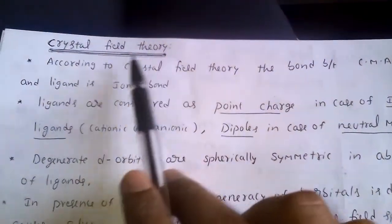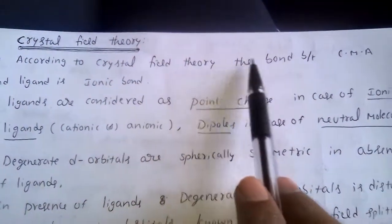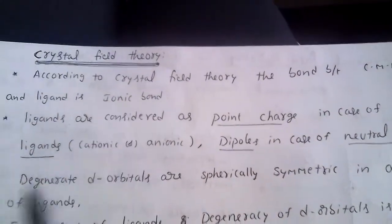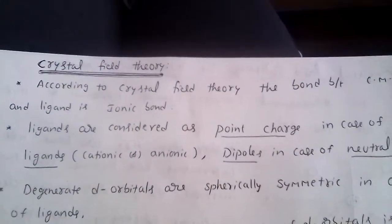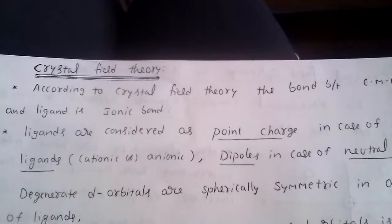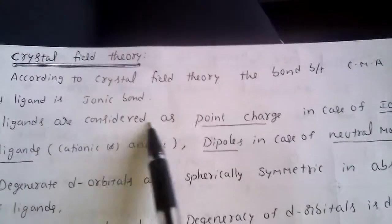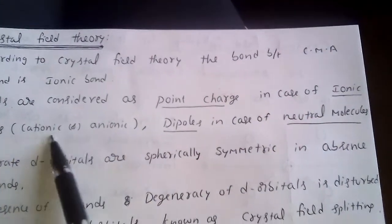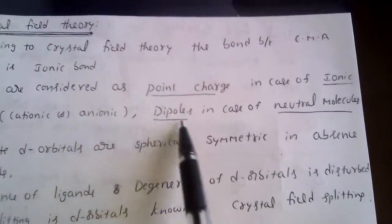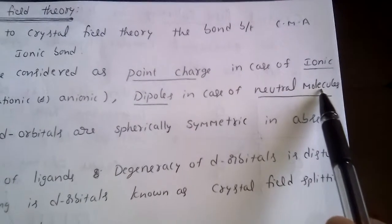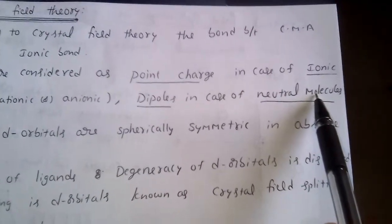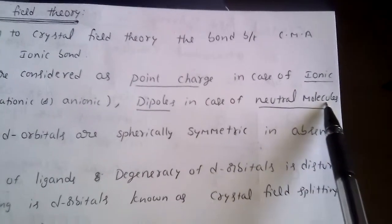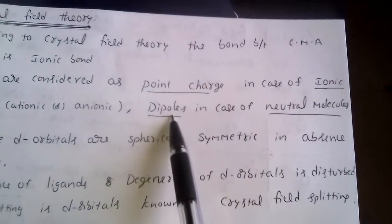According to crystal field theory, the bond between the central metal atom and ligand is an ionic bond. In valence bond theory, the bond is a coordinate covalent bond. Ligands are considered as point charges in case of ionic ligands — cationic or anionic — and as dipoles in case of neutral molecules such as water, NH3, CO, and NO.